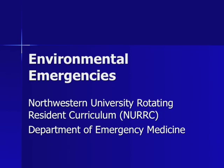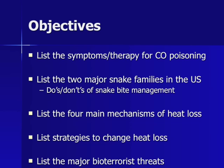Welcome to the Northwestern University Rotating Resident Curriculum in the Department of Emergency Medicine. This is the Environmental Emergencies Lecture. At the end of this lecture, you should be able to list the symptoms and therapy for carbon monoxide poisoning, list the two major snake families in the U.S. and discuss toxins, list the do's and don'ts of snake bite management, list the four main mechanisms of heat loss and strategies to change heat loss, and discuss the major bioterrorist threats to the United States today.